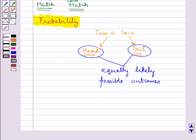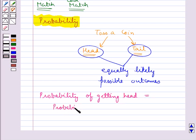These are possible outcomes, and so the probability of getting head would be equal to the probability of getting tail.